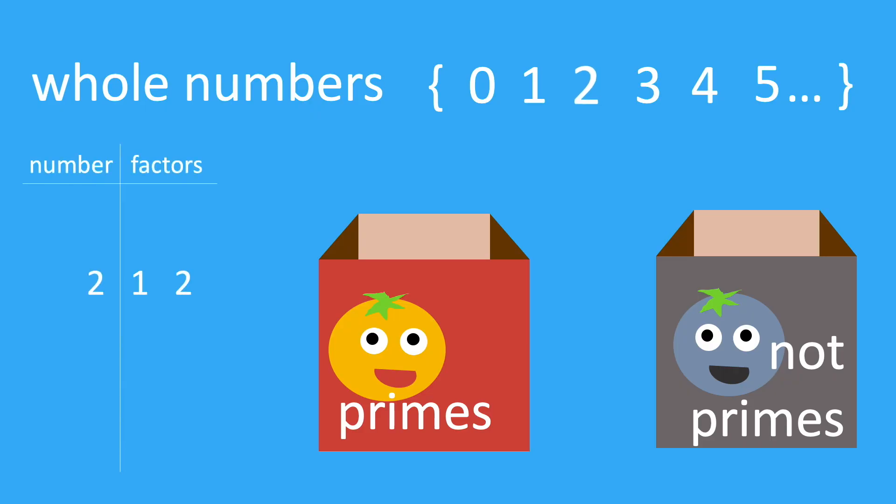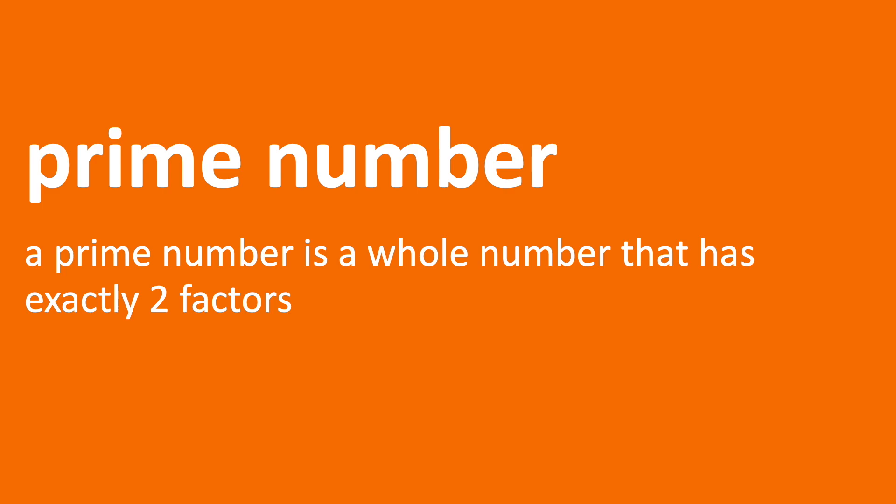Interestingly, we don't actually include the number one as a prime number. According to the definition, one isn't prime because it's only got one factor. But mathematicians have actually argued about this definition for centuries, so the exclusion of one is a deliberate and human-made decision.